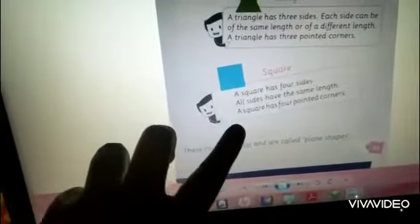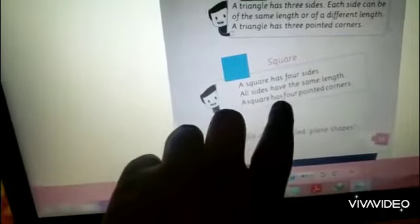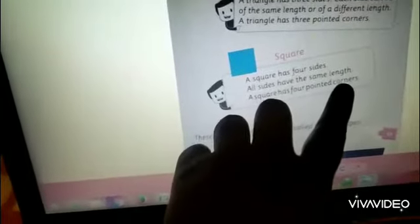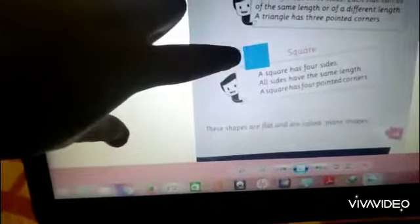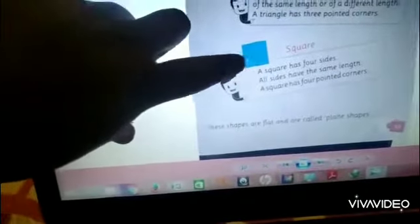As you see, a square has four pointed corners. Where are the corners? Here is the corner. Here is another. And here another. And here is another.